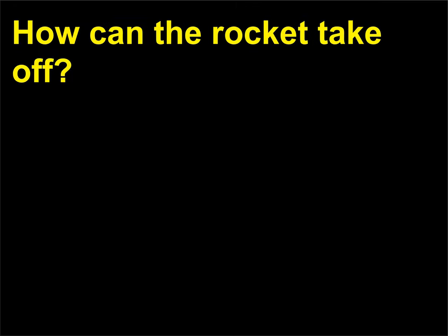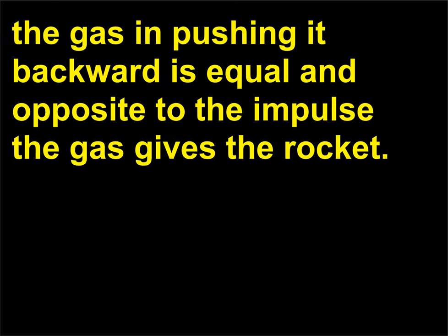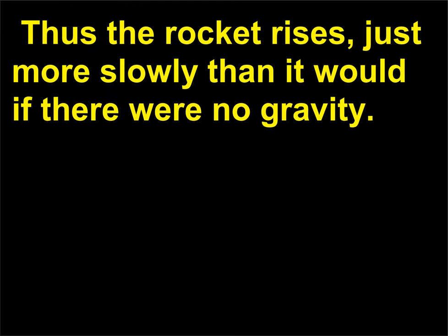How can a rocket take off? The momentum of the gas and rocket isn't simply conserved, but the impulse the rocket gives the gas in pushing it backward is equal and opposite to the impulse the gas gives the rocket. The rocket rises, just more slowly than it would if there were no gravity.